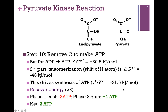So our net standard delta G is very favorable. Remember, this is the third and last of our possible control points — large favorable changes in delta G and an irreversible reaction. We recover energy in the form of ATP, and for one molecule of glucose, two molecules of enolpyruvate form pyruvate, yielding two molecules of ATP. In Phase 1, our cost was two molecules of ATP per molecule of glucose, and we netted two molecules of glyceraldehyde-3-phosphate. When we send both of those through Phase 2, we gain four molecules of ATP. So overall, the net gain in the pathway is two molecules of ATP.